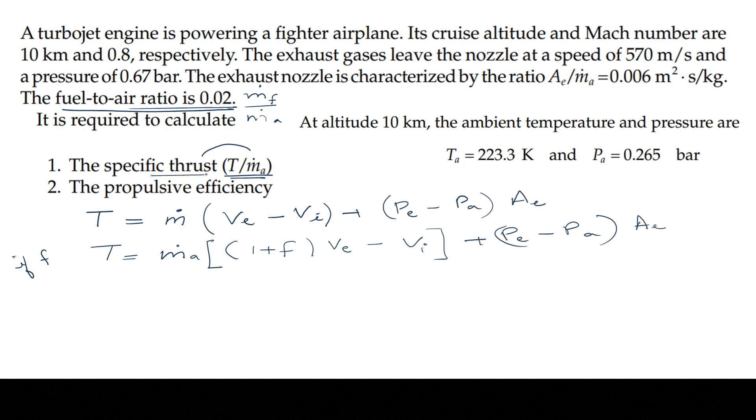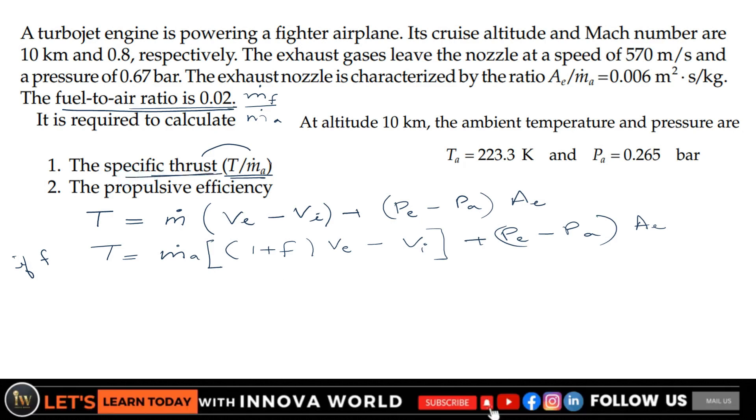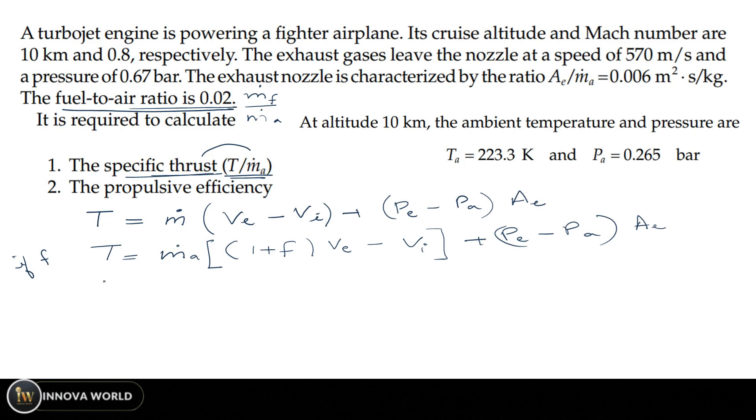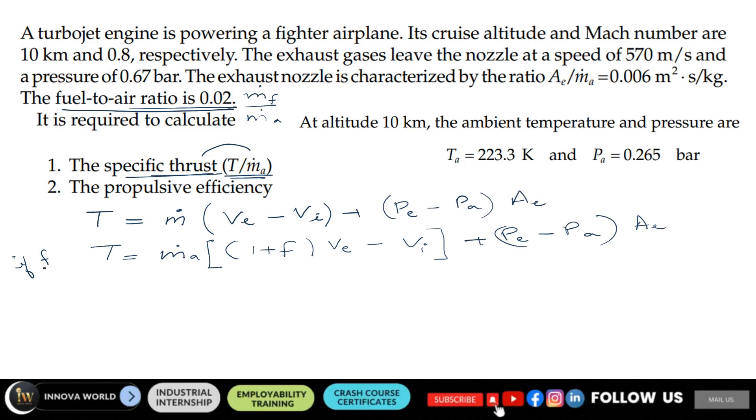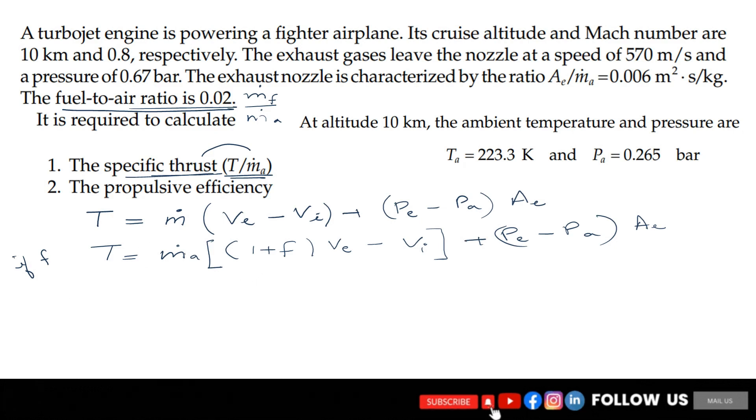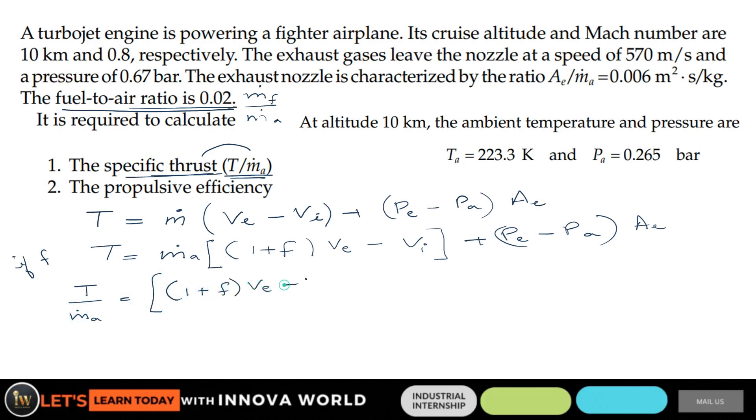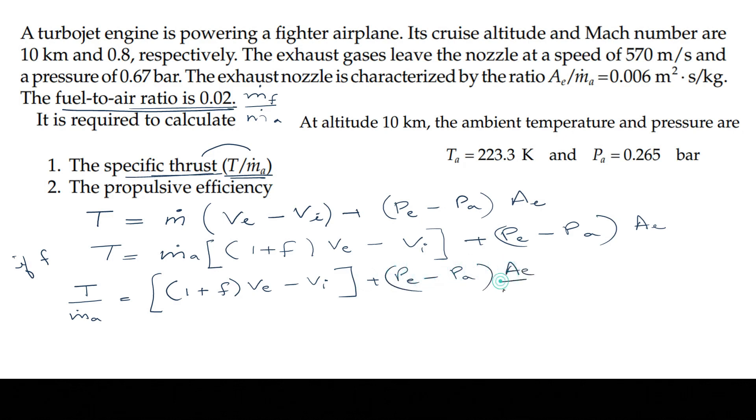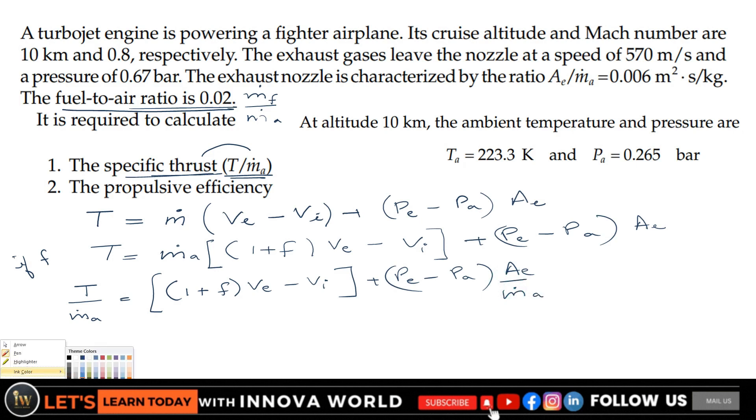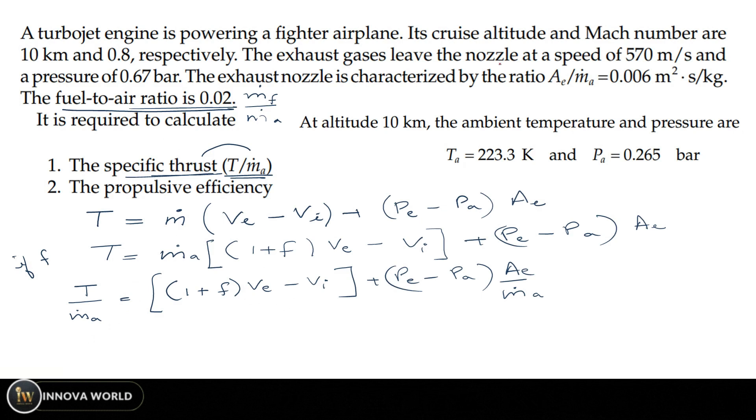For specific thrust T/ṁa, just divide the entire equation by ṁa. So T/ṁa = (1 + f)(Ve - Vi) + (Pe - Pa)Ae/ṁa. These are the things provided. Now check in the question what are the given data.